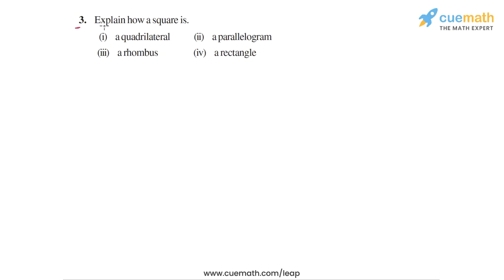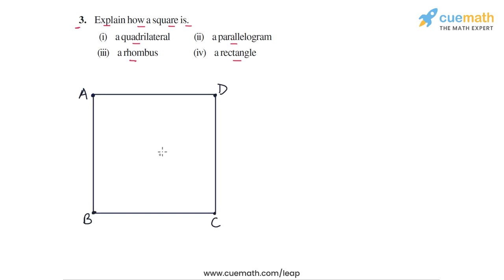Question 3 says: explain how a square is a quadrilateral, a parallelogram, a rhombus, and a rectangle. This is actually a very straightforward question. Let's consider any arbitrary square. Here I've taken square ABCD, and let's figure out why this square should be a quadrilateral, a parallelogram, a rhombus, and a rectangle.